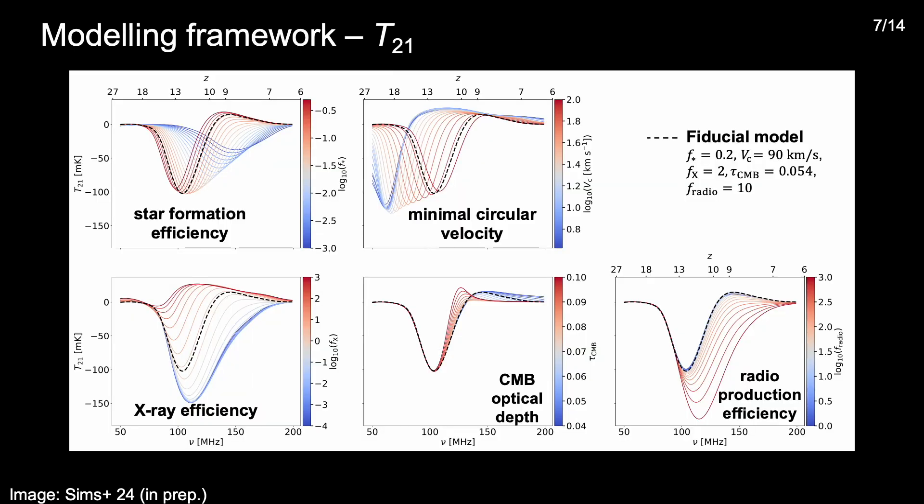One informative way to visualize our modeling framework is to look at the impacts of changes in the astrophysical parameters on the modeled summary statistics, such as the global 21cm signal shown here. The black dashed line in each of these plots shows a fiducial global 21cm model defined by the astrophysical parameters listed on the top right. Each panel of the plot then shows the impact of varying one of the parameters within the prior range used in our analysis, which are shown in the color bars, while holding the others fixed at their values in the fiducial model.